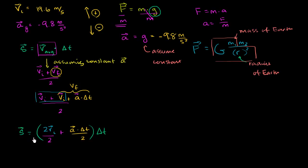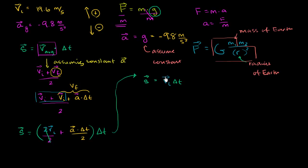Multiplying this average velocity expression by change in time gives displacement. The 2s cancel out, and we get: displacement equals initial velocity times change in time, plus one-half times acceleration times change in time squared. Change in time times change in time is just change in time squared — the triangle symbol just means 'change in.'